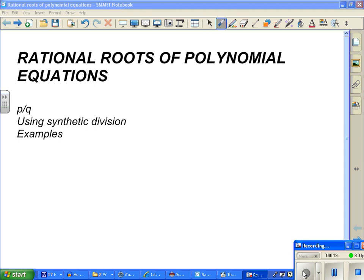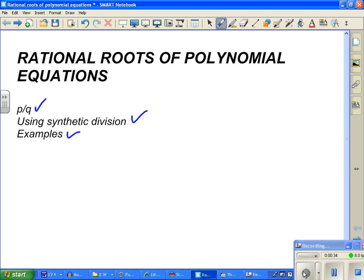So most of this should be review. We're going to go over what P and Q are, and remember factors are P and Q, or potential zeros are P over Q. I'm using synthetic division to break the polynomial down into a quadratic, and then we're going to do a couple of examples so you can see where we're at.